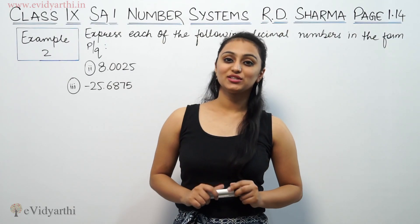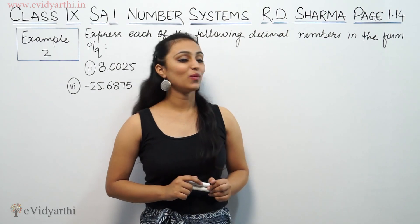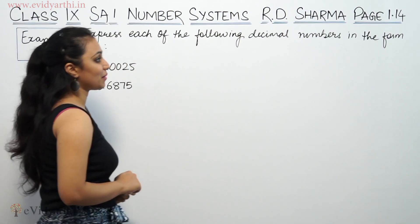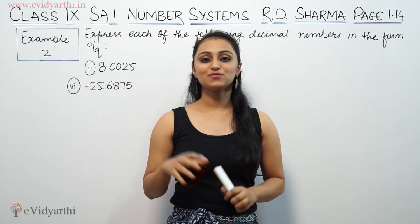Hi, this is Khujpoo with another question of R.D. Sharma. This is example number 2 from page number 1.14. This says, express each of the following decimal numbers in the form of P by Q. That means we have a rational number, a fraction. We have to represent this form.